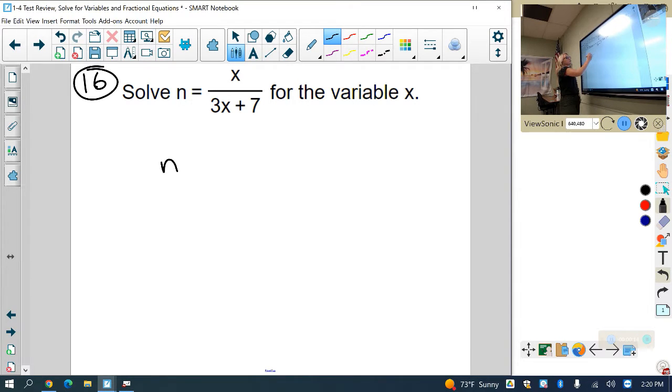So the first thing I want to do for this one is I want to multiply both sides by the denominator to get that x out of the denominator. So I'm going to multiply both sides by 3x plus 7.